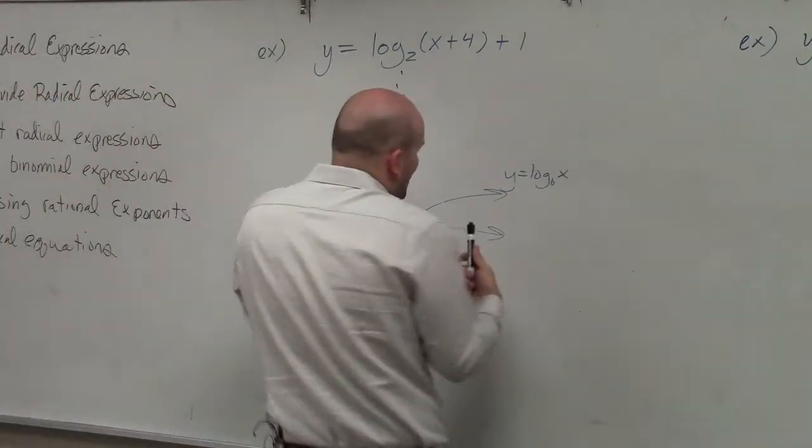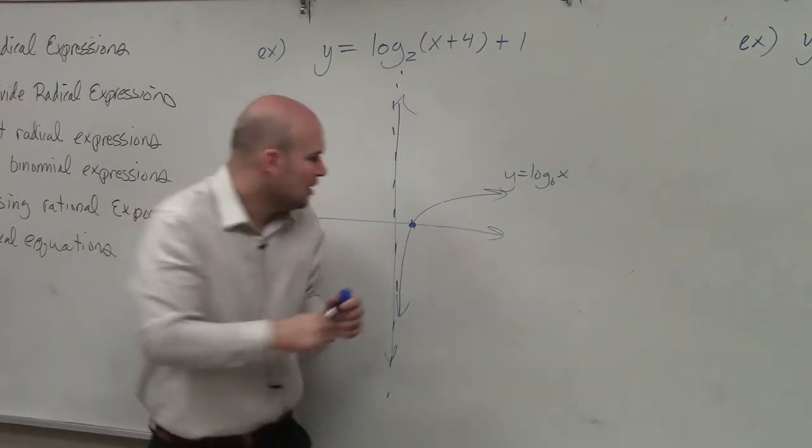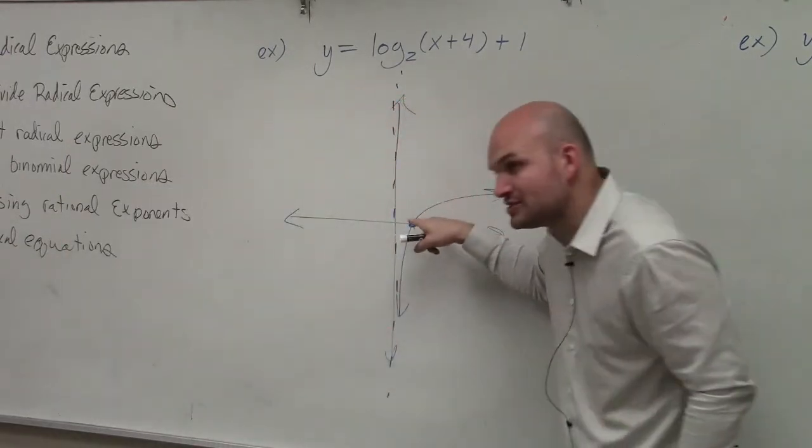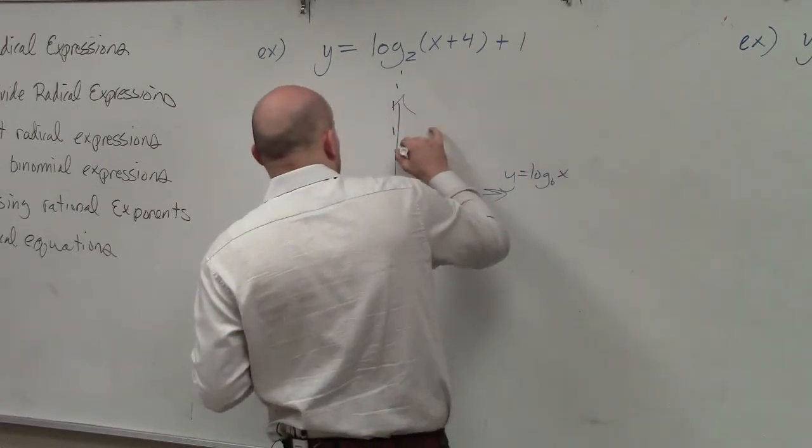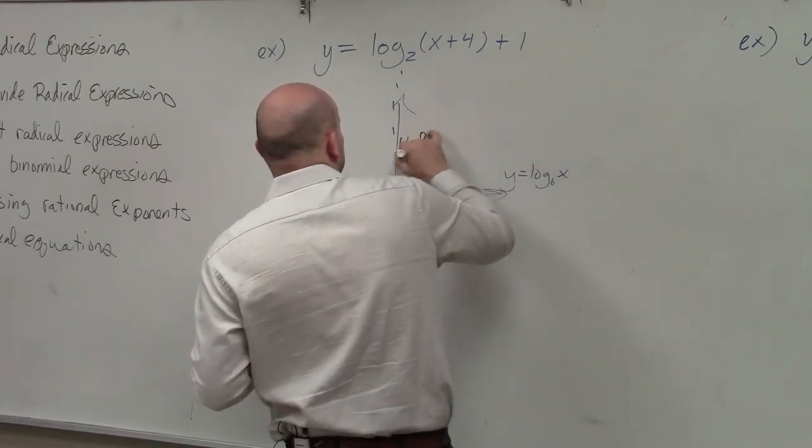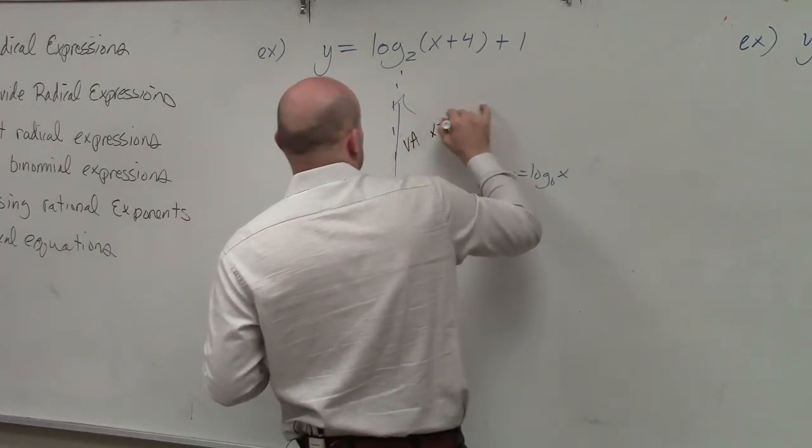And remember, guys, the log graph, all I wanted you to be concerned about, we haven't talked about the table or anything like that. All I wanted you to be concerned about was that they have an x-intercept at 1, 0, as well as a vertical asymptote at x equals 0.